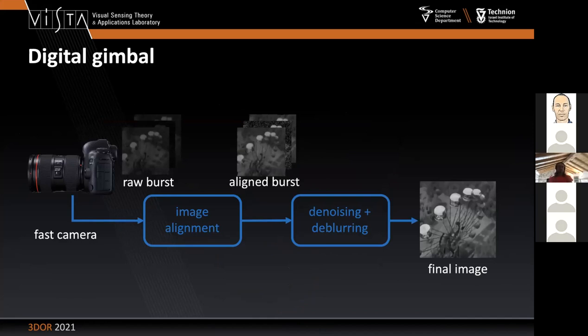We take a fast burst of frames, and from that burst — which is blurred and suffers from other problems — we'd like to reconstruct a video at regular FPS, at 50 or 60 FPS, without the shaking caused by platform motion. The problem can be roughly seen as: first, align the images in the burst since they are misaligned due to motion. Then, once you have the aligned burst, you need to solve a simultaneous denoising and deblurring problem, because long exposures cause motion blur since the camera is moving.